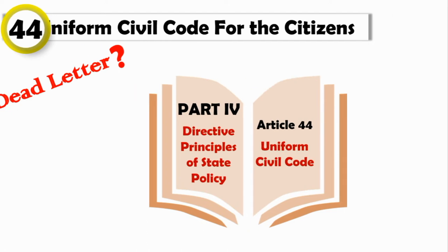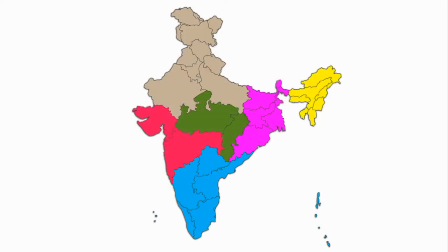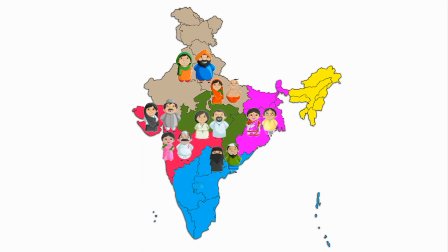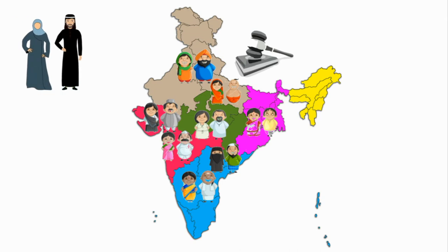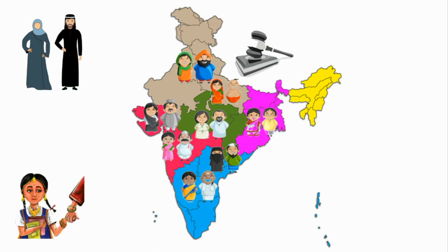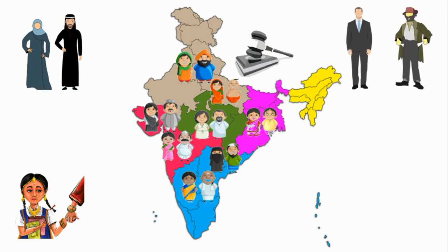As we all know, India is a diversified country — diversity in religion, culture, language, faith, and belief, and it is also geographically diversified. So in such a country, making one common law for everyone is a difficult task. But now it is not a matter of difficulty; it is a matter of need — to remove gender disparity because of various religious laws, to abolish some personal laws that are a source of loopholes in the legal system, to ensure equality of status among the citizens, and to promote authentic secularism in India.